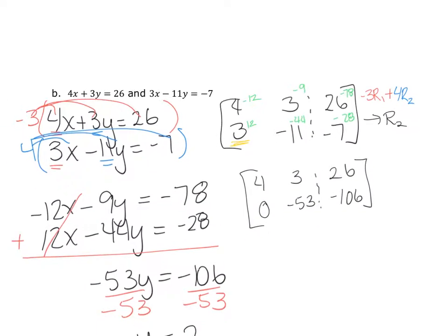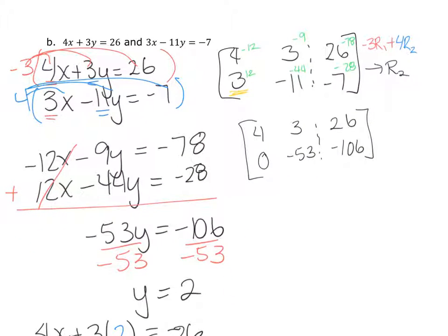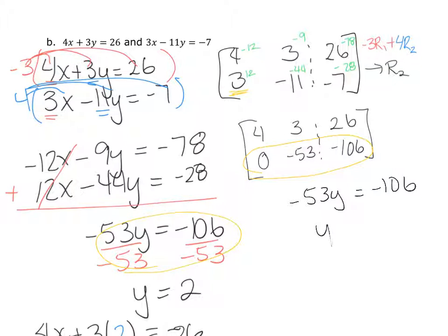Comparing the matrix result to the elimination result, this row matches what we computed. Rewriting: negative 53y equals negative 106, so y equals 2. Substituting back gives x equals 5. The ordered pair is (5, 2).